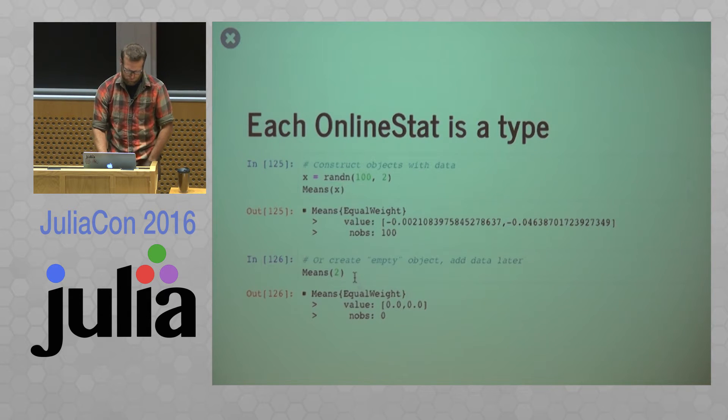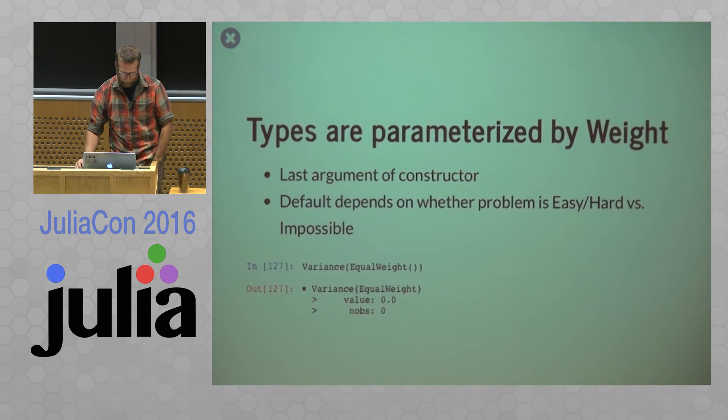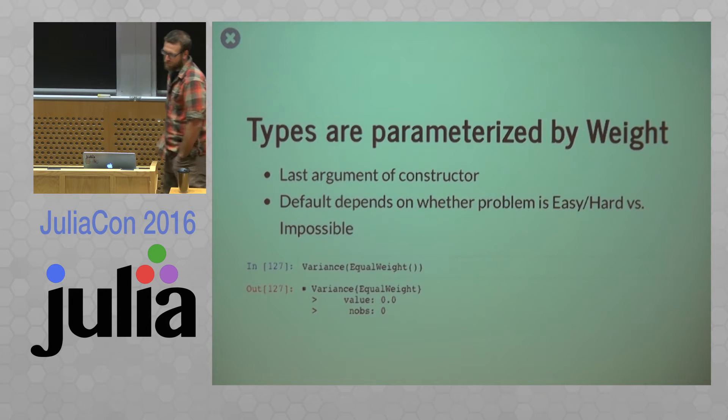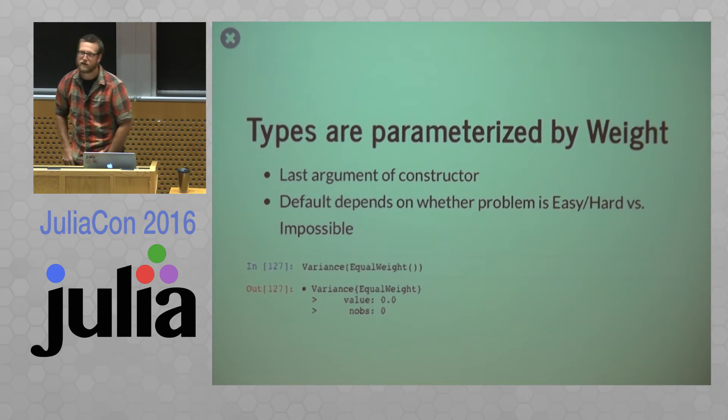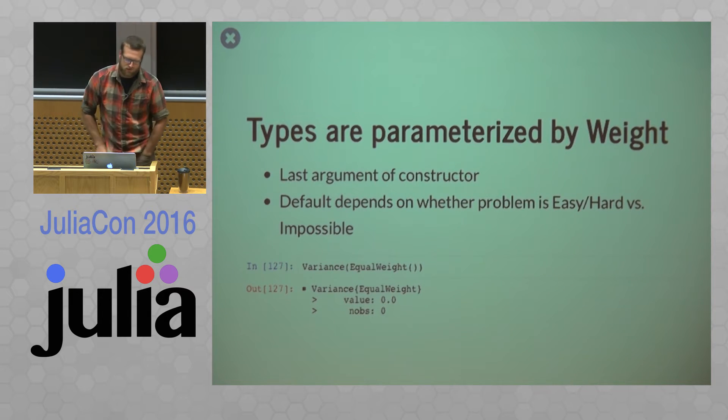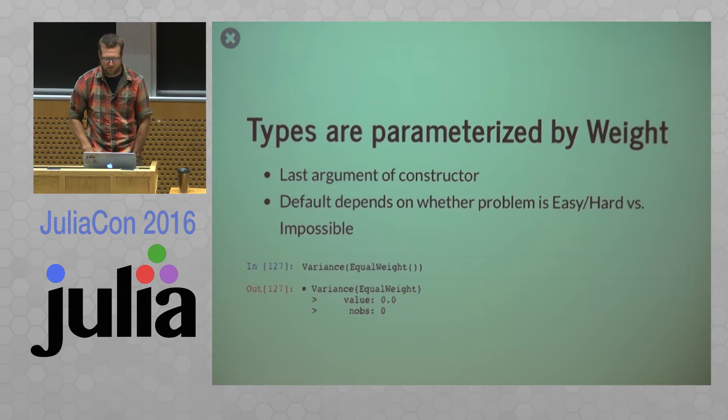And all these types are parameterized by a weight type. So this is always the last argument of the constructor. And the default depends on whether the problem is classified as I talked about before as easy hard versus impossible. So the easy and hard ones are given an equal weight. I'll talk about the impossible ones in a bit.